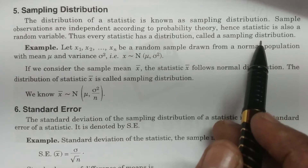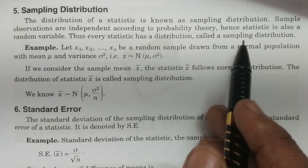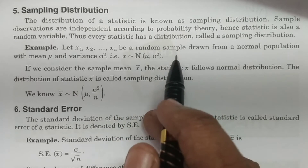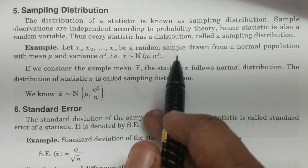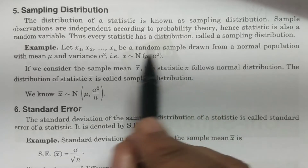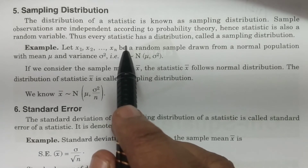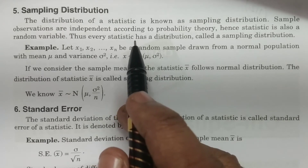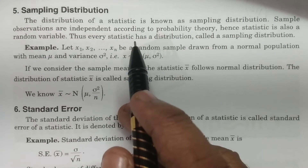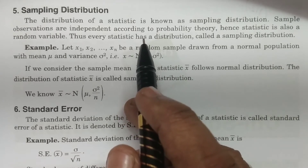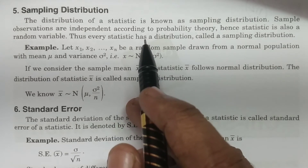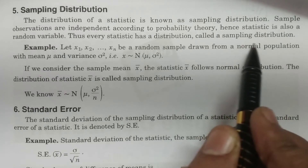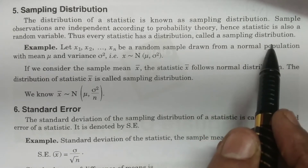Being a random variable, if a statistic follows some particular distribution, it is a probability distribution. We call it a sampling distribution because the statistic is a function drawn from the sample observations — it is considered due to the sampling procedure. That is the reason why this distribution is known as sampling distribution.